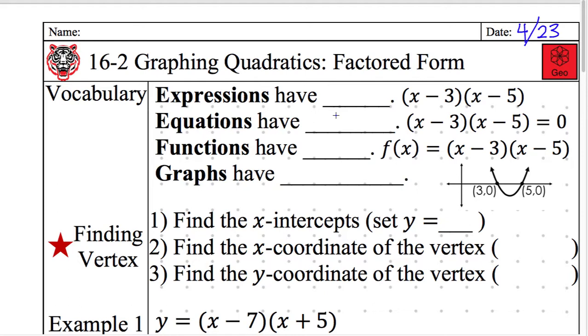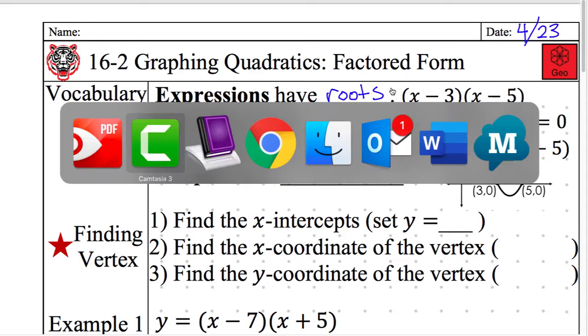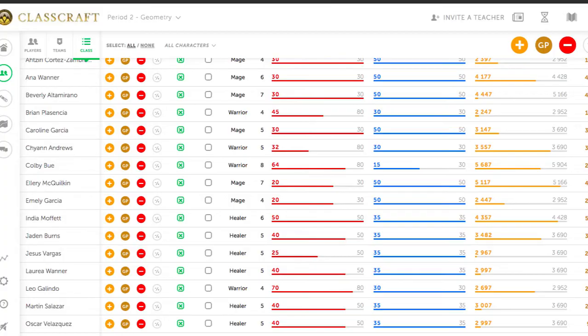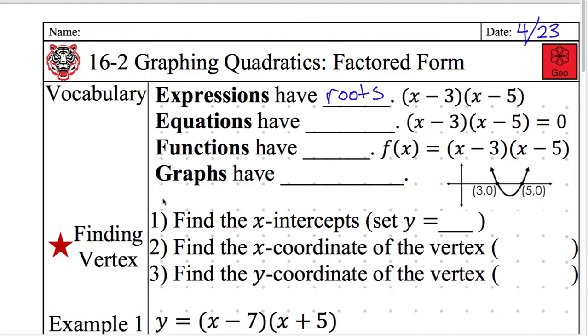Quiet raised hand. Expressions have what? And of course, I always forget to do the participation cards. Anyone want to help me out? India, gave your hand first. Expressions have what? Quiet raised hand. Look behind Chewy if you don't know. Expressions have what? Cheyenne, write it down. Expressions have roots. Thank you, Cheyenne.